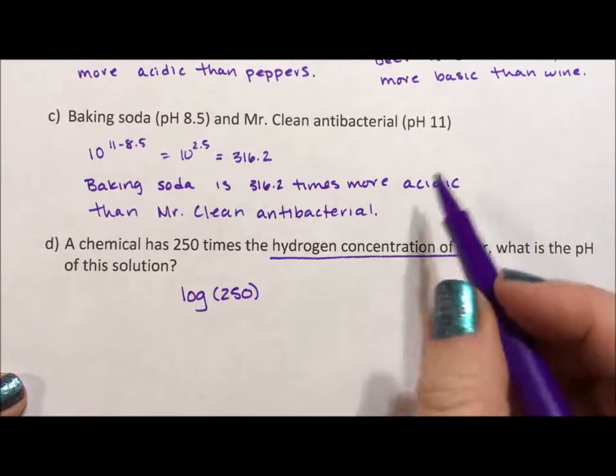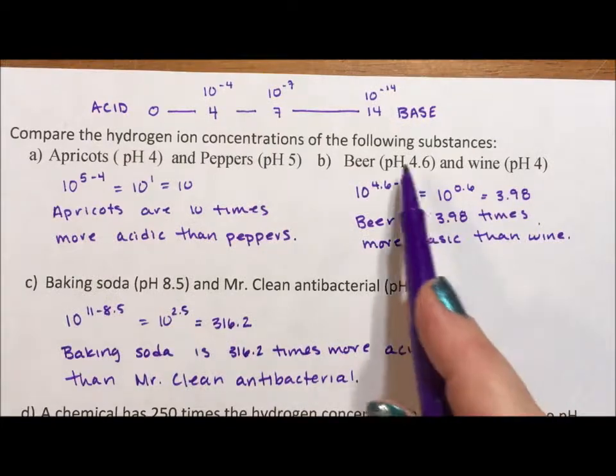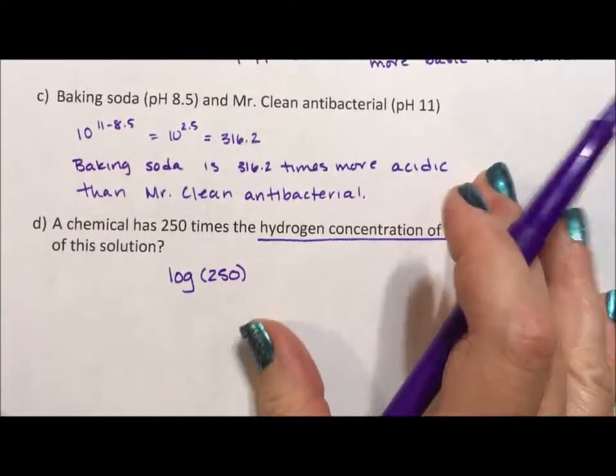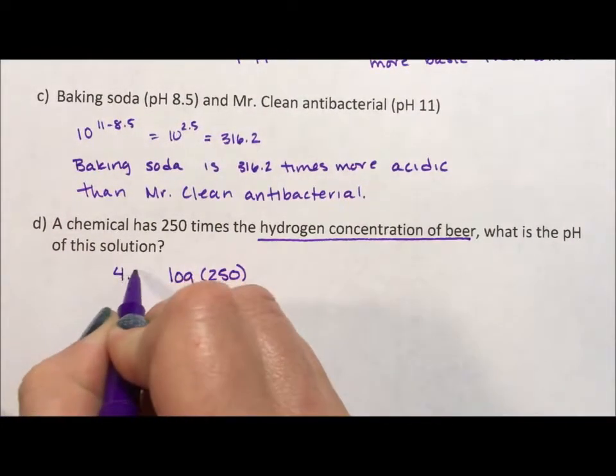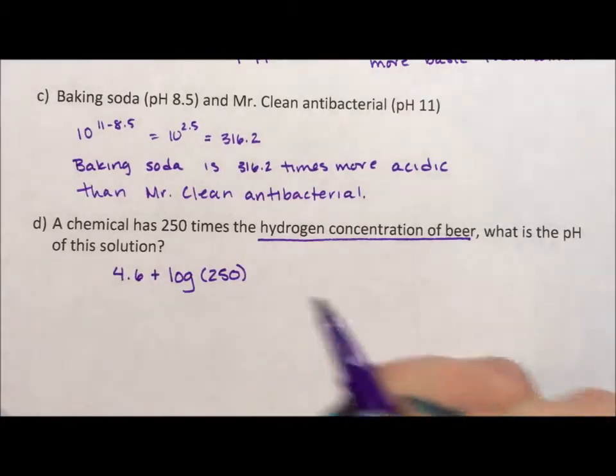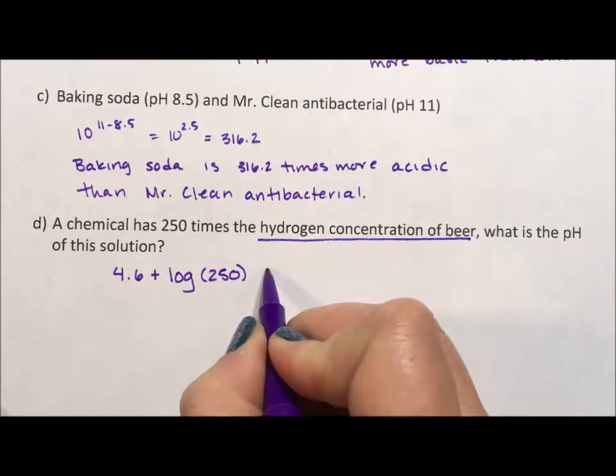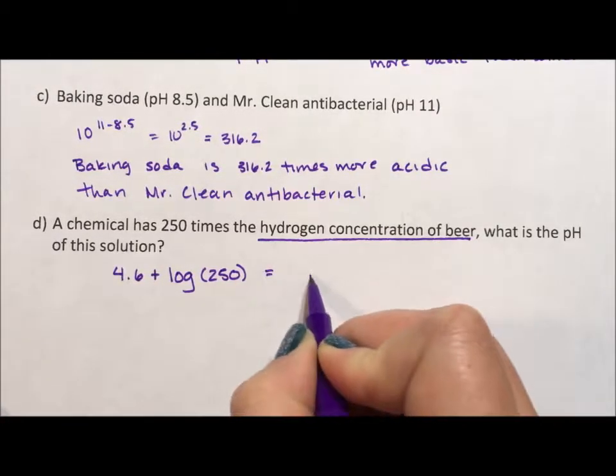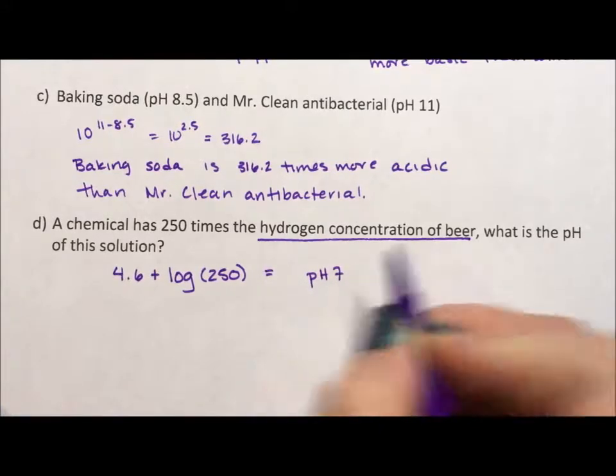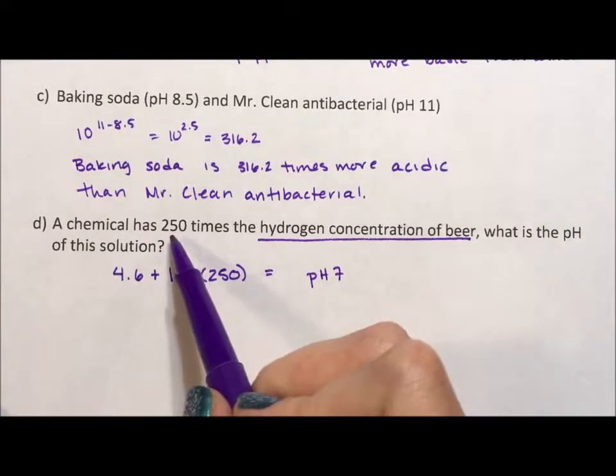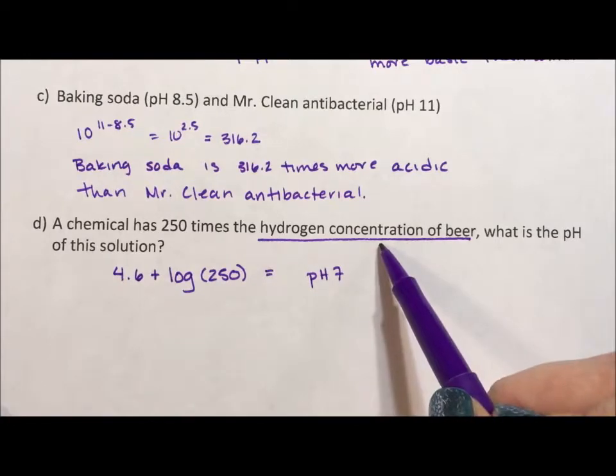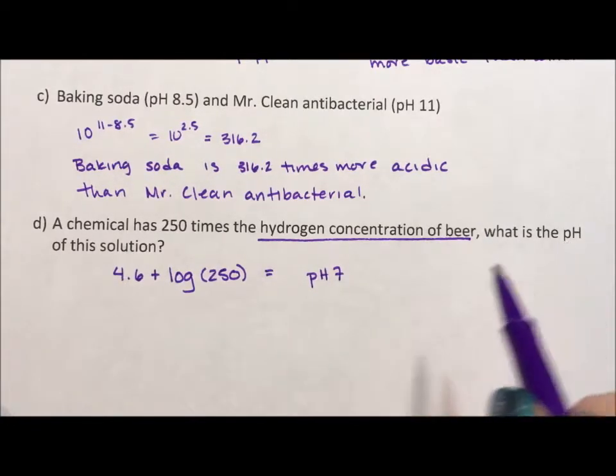We're comparing it with beer and up here we saw that beer was 4.6 and it is more so we add that and when we do that calculation we end up with a pH of 7. So a chemical that is 250 times the hydrogen ion concentration of beer has a pH of 7.